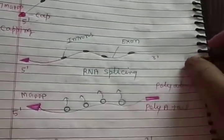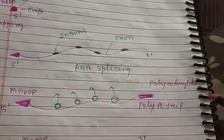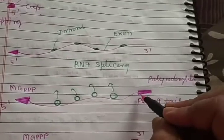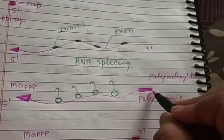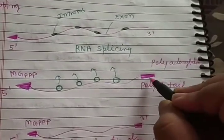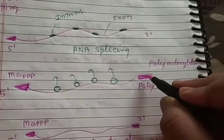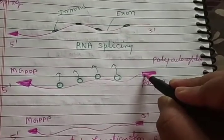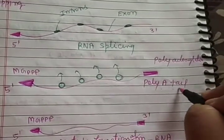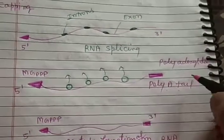After capping, the tailing process occurs. In tailing, 200–300 adenine residues are attached at the 3' end by the enzyme poly-A polymerase. After attachment of 200–300 adenine residues, a poly-A tail is formed. This whole process is known as polyadenylation.